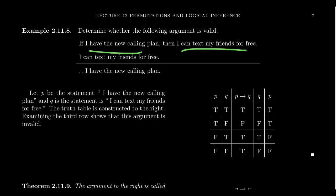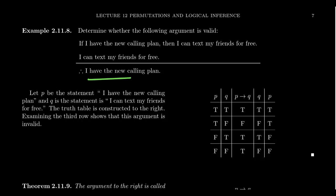Let's pretend we live in those dark ages right now. If you have the new calling plan, then you can text your friends for free. And then the second statement in the argument is: I can text my friends for free. And therefore, I have the new calling plan. Let's look at the structure of this argument. The first one is conditional, so let's break it into two primitive statements: let's call 'I have the new calling plan' statement P, and 'I can text my friends for free' statement Q.